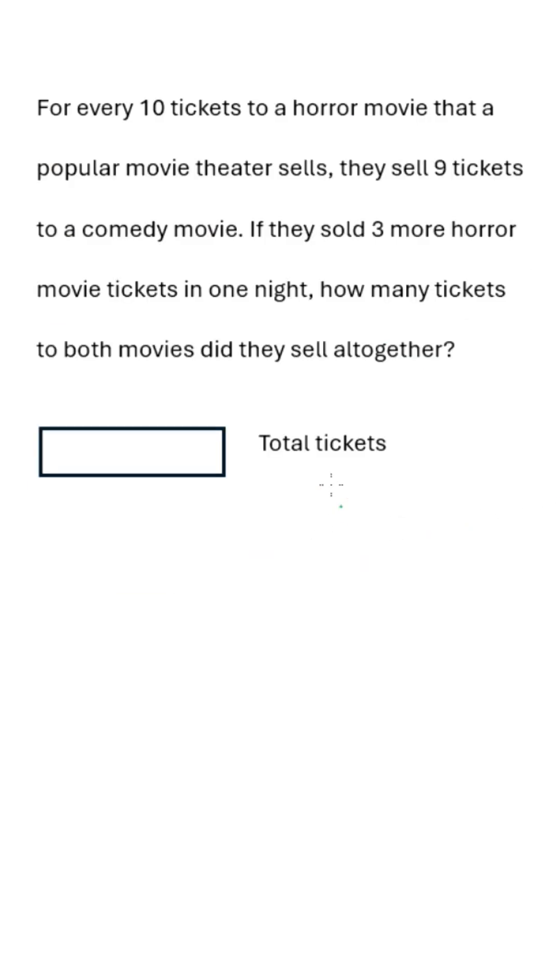For every 10 tickets to a horror movie that a popular movie theater sells, they sell 9 tickets to a comedy movie. So the ratio is 10 is to 9.